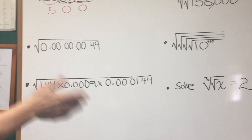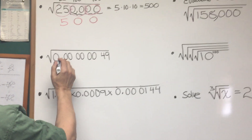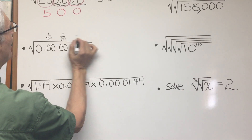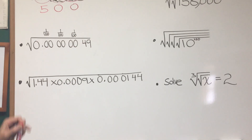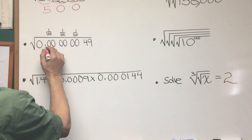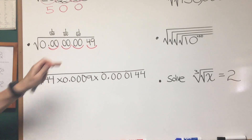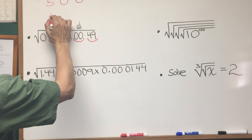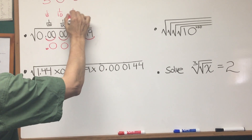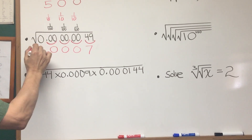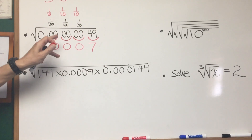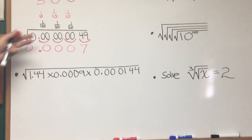Now let's go to the square root of a number smaller than one, a decimal number. Here we have the square root of 0.000049. Every double zero here is a multiplication by one one-hundredth. If we apply the same shortcut — partitioning the decimal place starting from the decimal point into pairs — I know that the square root of one one-hundredth is one-tenth, so two zeros come out as one zero, two zeros come out as one zero again, and the square root of 49 is 7. So I can evaluate the square root by this simple shortcut, realizing that double zero means a multiplication by one one-hundredth when it's to the right of a decimal point.